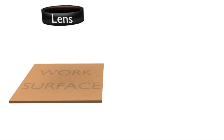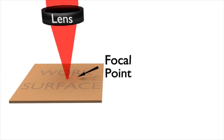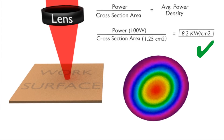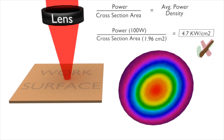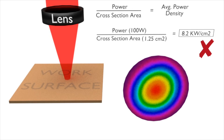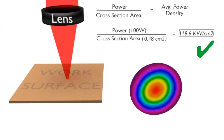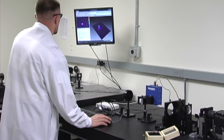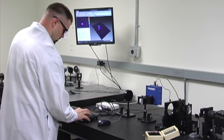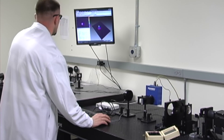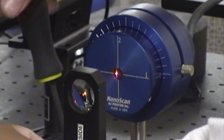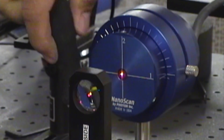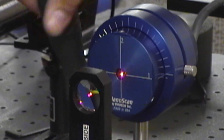Reduction in laser power in conjunction with increases in laser spot size reduces power density. This efficiency loss will eventually cause the system to alter the process. Periodic measurement of the laser system is the best way to manage these changes and to better predict when corrective maintenance needs to be performed.